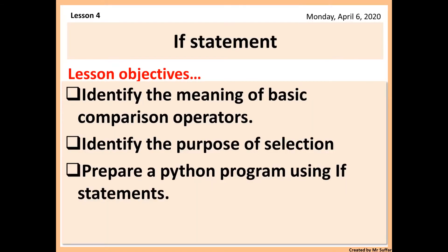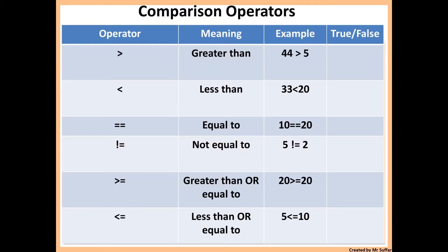This lesson will be about if statements. Before we code if statements, we need to know about comparison operators. These are the six comparison operators you need to know. Firstly, there is the greater than sign. This means that the number on the left side is bigger than the number on the right side. If that's true then we put true, otherwise we put false.